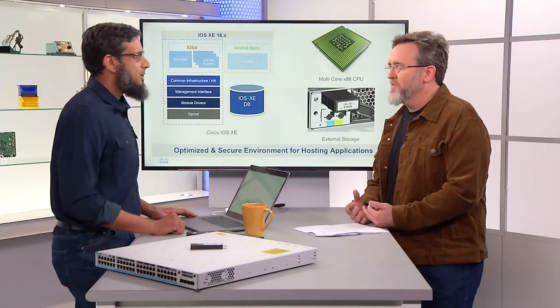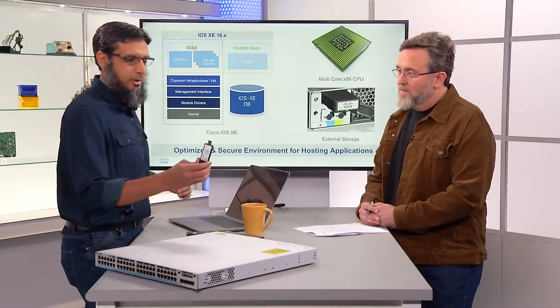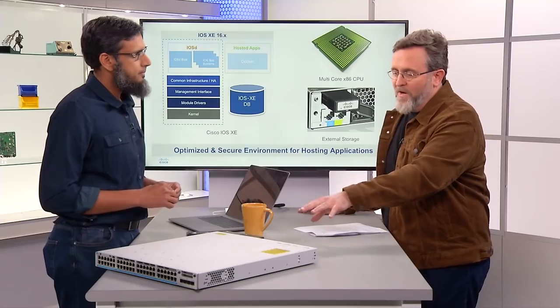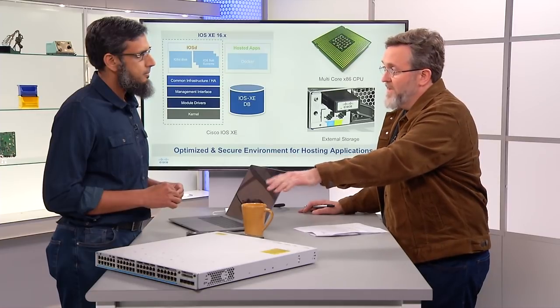Traditionally in network switches we did not have a lot of storage — mostly 4 gig, 8 gig, maybe 16 gig, just what the switch needs. But in the Catalyst 9K family we thought about things that can happen in the future and provisioned for external storage that can go into hundreds of gigs. On the Catalyst 9300, we have 120 gig storage capacity with a USB — which is right here on the switch.